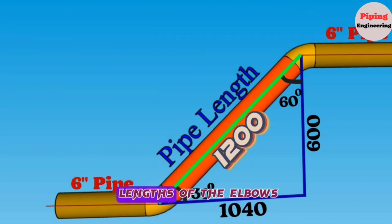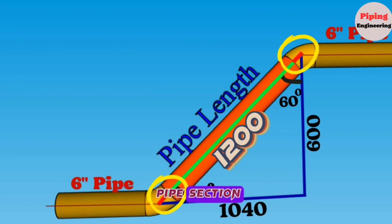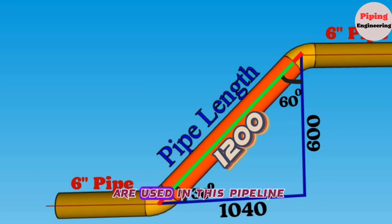If we subtract the lengths of the elbows and the gaps for welding from this total length, we can find the length of the red pipe section. Two different size elbows are used in this pipeline. One is 30-degree and the other one is 60-degree elbows. Now let's calculate the elbows' length.